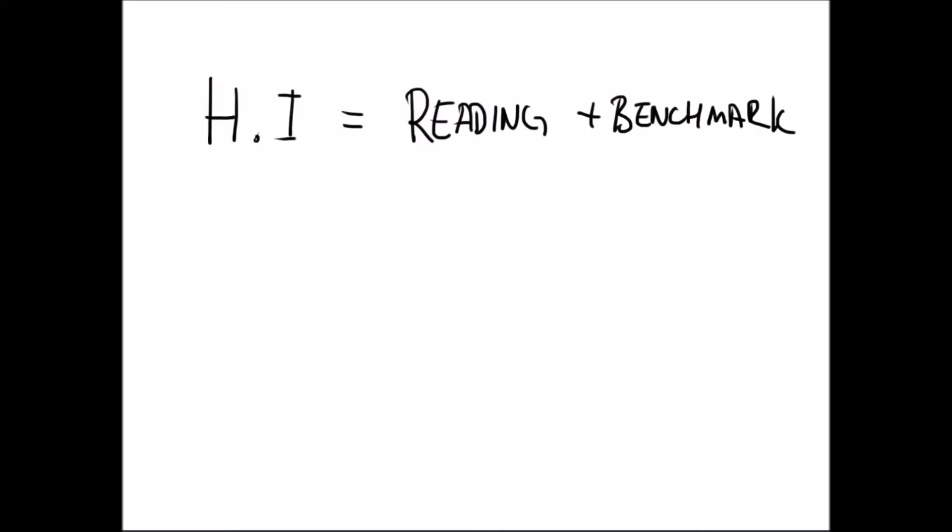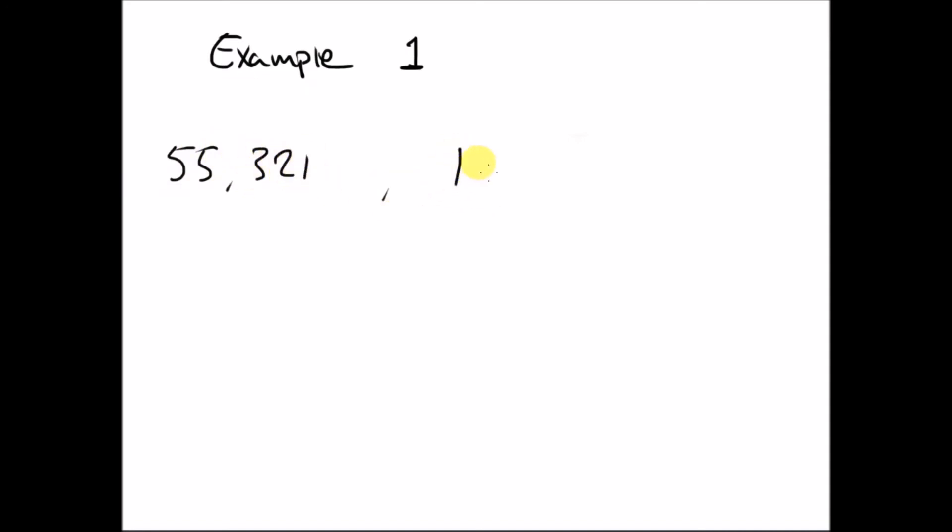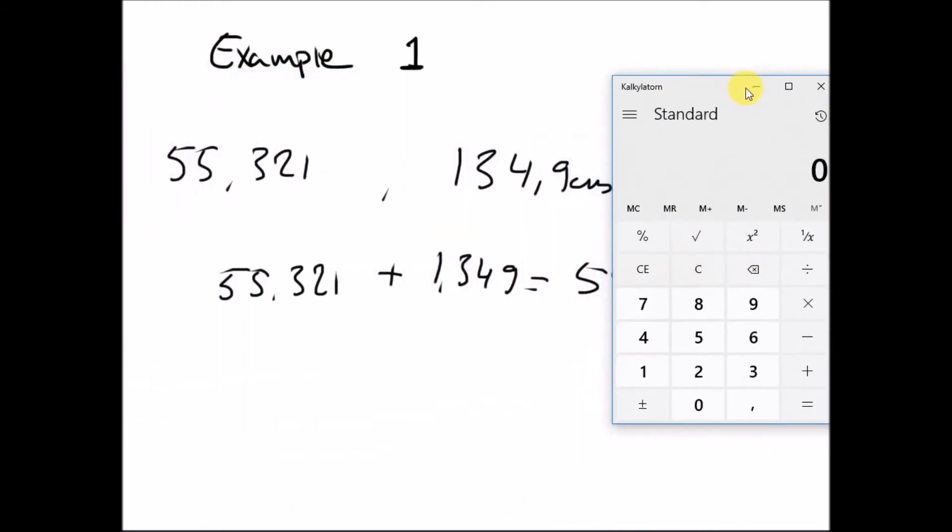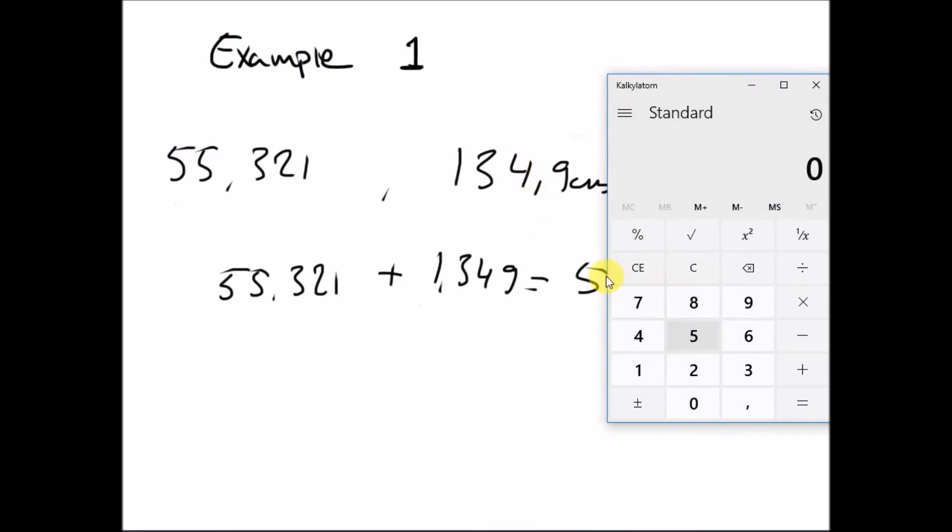Here's a worked example. Say your datum is plus 55.321 and your reading is 134.9 centimeters. You'd sum them up: 55.321 plus 1.349, that's equal to 56.67. And that is your height of instrument. Use your calculator, write down your time, date, which datum you took that off from, your reading, your height of instrument.